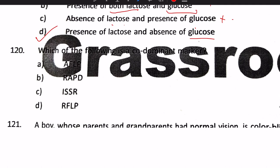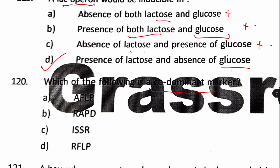Next question: which one of the following is a co-dominant marker — AFLP, RAPD, ISSR, or RFLP? Co-dominant markers allow identification of both homozygous and heterozygous genotypes: heterozygotes show two bands and homozygotes show one band. RFLP is an example of a co-dominant marker. Answer: option D, RFLP.